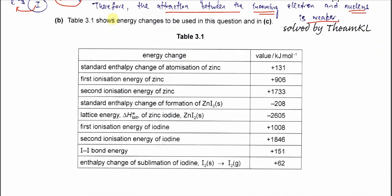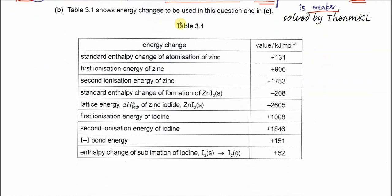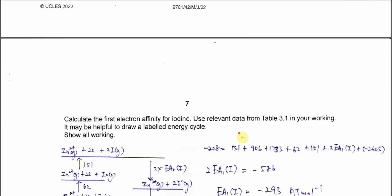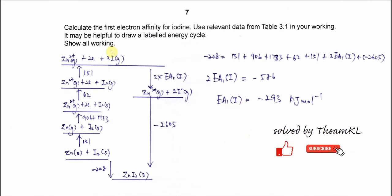For part B, Table 3.1 shows the energy changes for this question. Table 3.1 is given. We need to use these values for the calculations later. We'll use them one by one. I'll tell you how and when to use them. For this part B, it asks to calculate the first EA for iodine. Use the relevant data from Table 3.1. Of course it's better to draw the energy cycle or the Born-Haber cycle. Then you can get the values easier. Let's start.